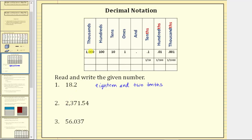For number two, we have a two in the thousands place value, a three in the hundreds place value, a seven in the tens place value, a one in the ones place value, a decimal point, five in the tenths place value, and a four in the hundredths place value. We read and write this number as "2,371 and 54 hundredths." Notice to the right of the decimal point, we always use the place value of the digit furthest to the right. The four is in the hundredths place value, and we read this as 54 hundredths.